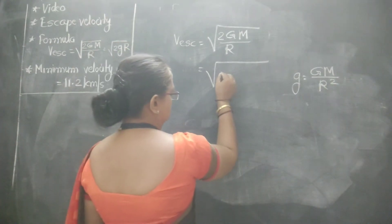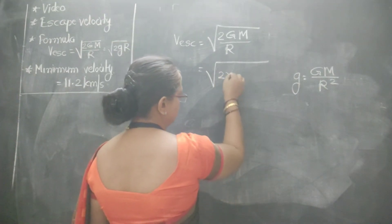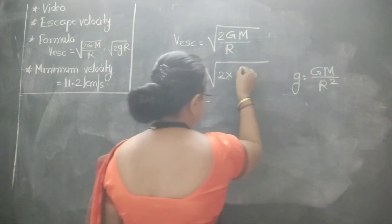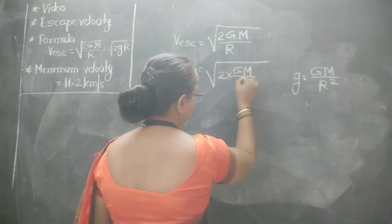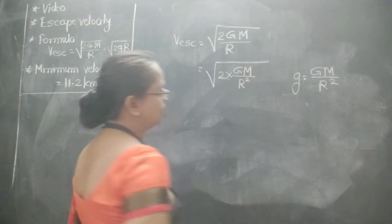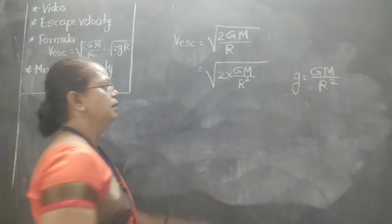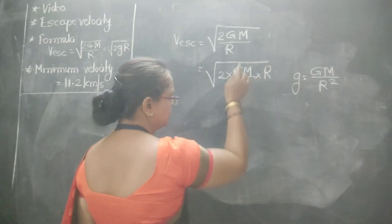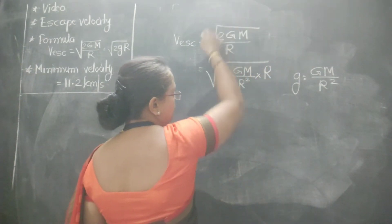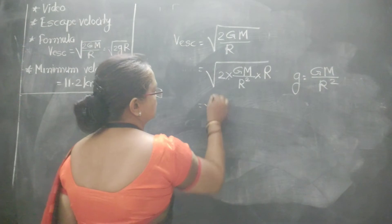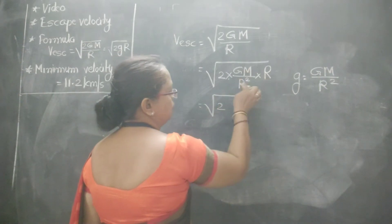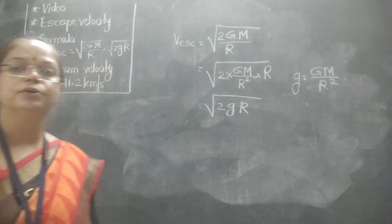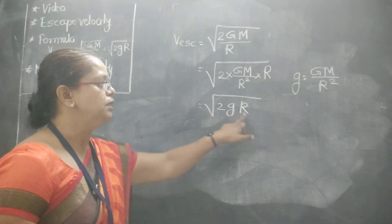Substituting the value of GM = gR² into the formula, we get: v_s equals square root of 2gR. This gives us the simplified form of the escape velocity formula.